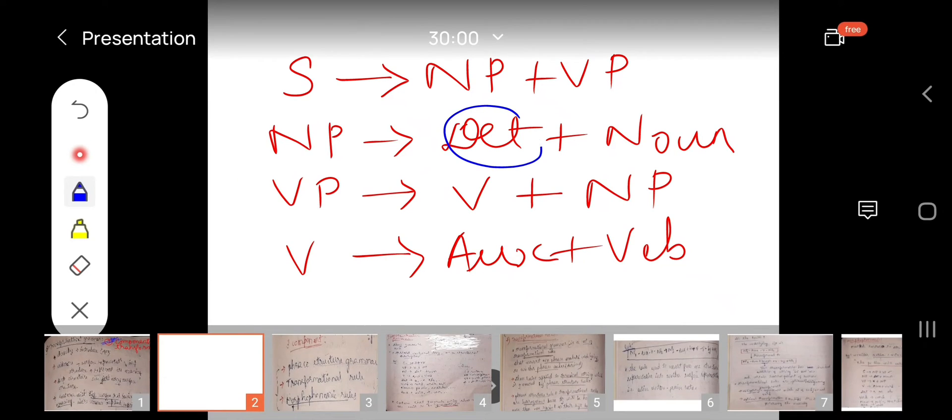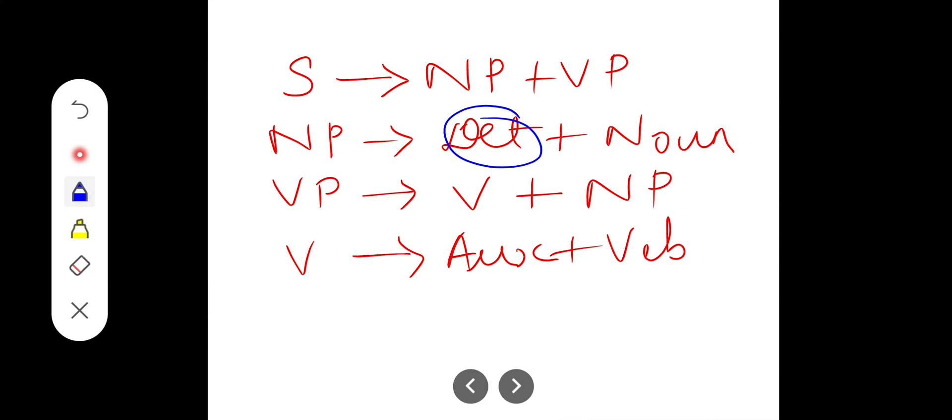So what exactly does this determiner mean? Determiners are a and the. These are all the determiners. Noun means, you all know, it's a person, place, thing. That's the noun.